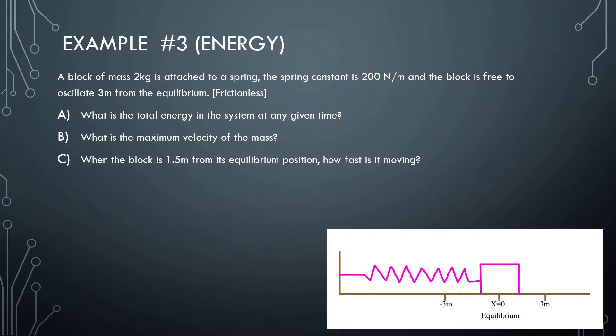Example number three: a block of mass 2 kilograms is attached to a spring. The spring constant is 200 newtons per meter, and the block is free to oscillate 3 meters from the equilibrium — frictionless, so it's going to be oscillating forever. We can see that the amplitude is 3 meters. So what is the total energy of the system at any given time?